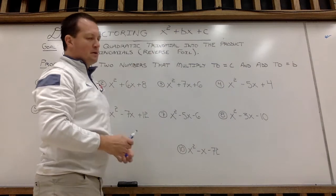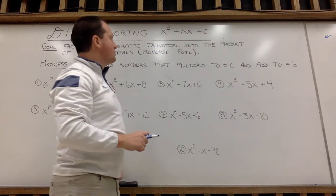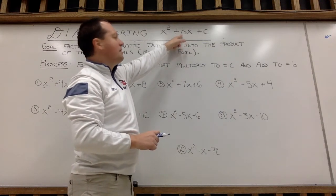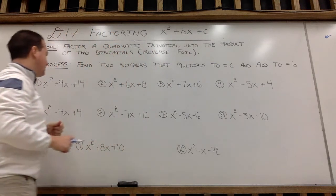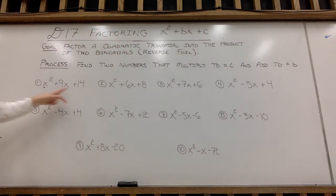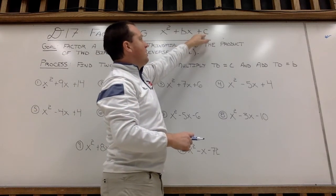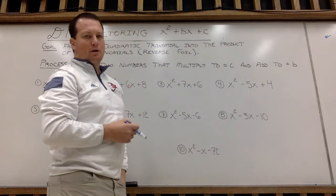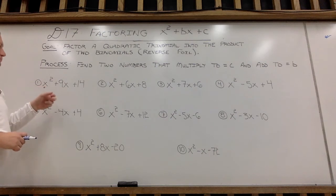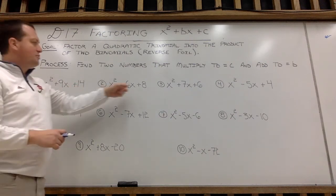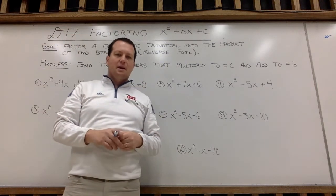I have two other variable values that I'm going to be looking at today. b is going to be the number in front of my x to the first power. So as I look at example 1, my b value is 9. Example 2, b is 6. And then finally, c is my integer numerical value at the end of the trinomial. So in example 1, c is 14. Example 2, c is 8.